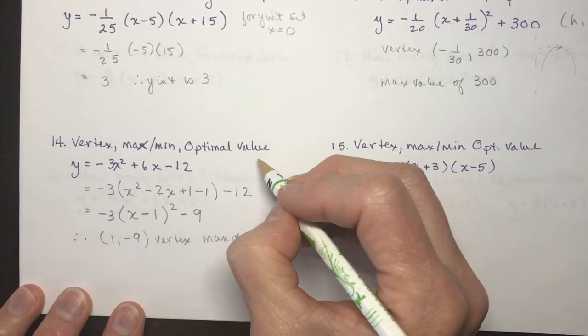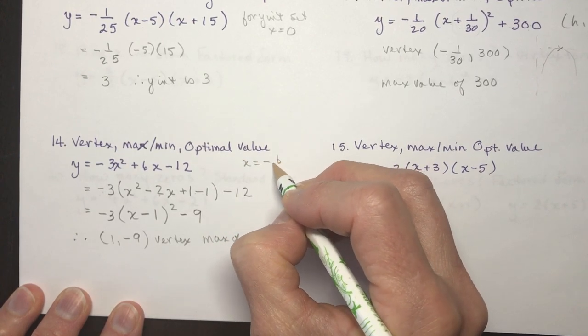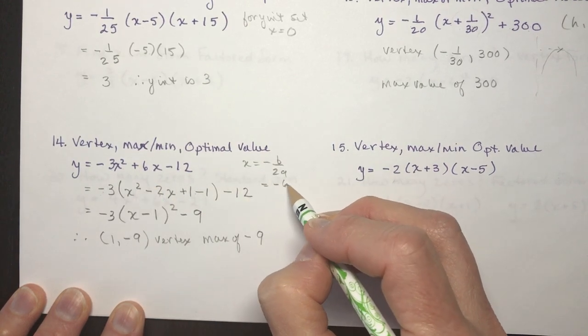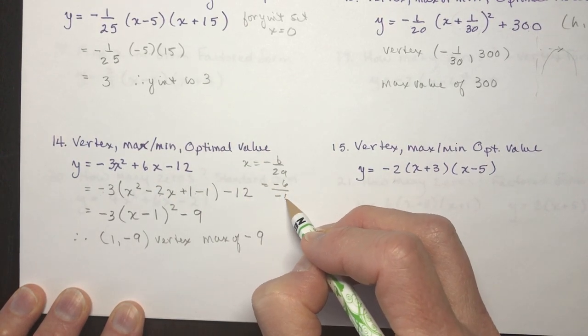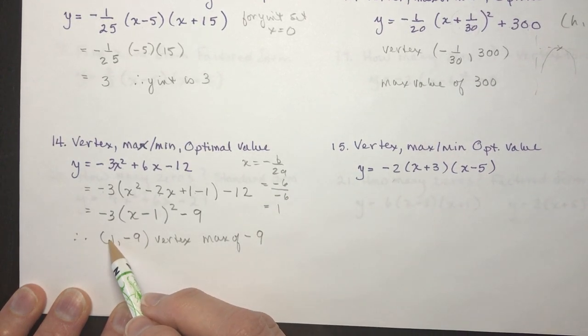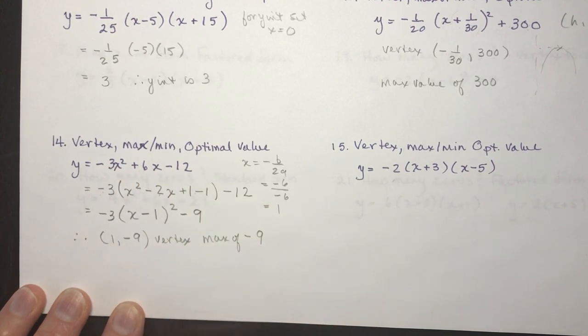If you had minus b over 2a, we could probably do this one really fast. Minus b would be minus 6 over 2a over minus 6, that gives me x is 1. So I get 1, and when I plug in 1 here, I would get minus 9.